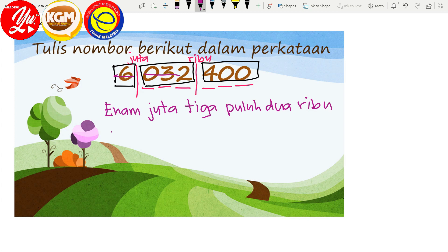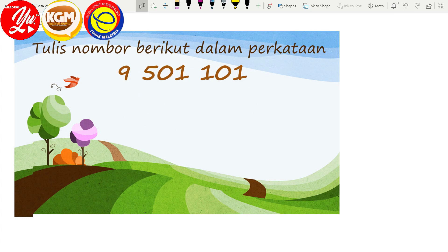Yang hujung: 4 ratus. Jadi kita baca semula — 6 juta, 32 ribu, empat ratus. Di hujung ya.